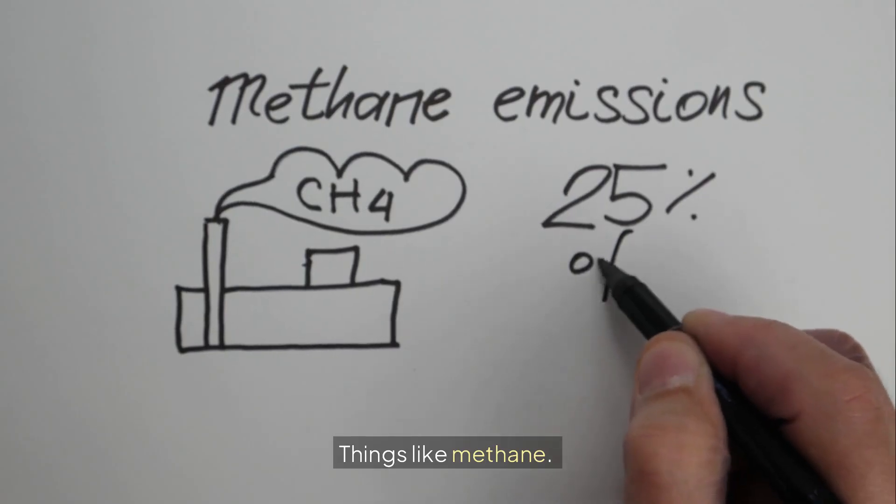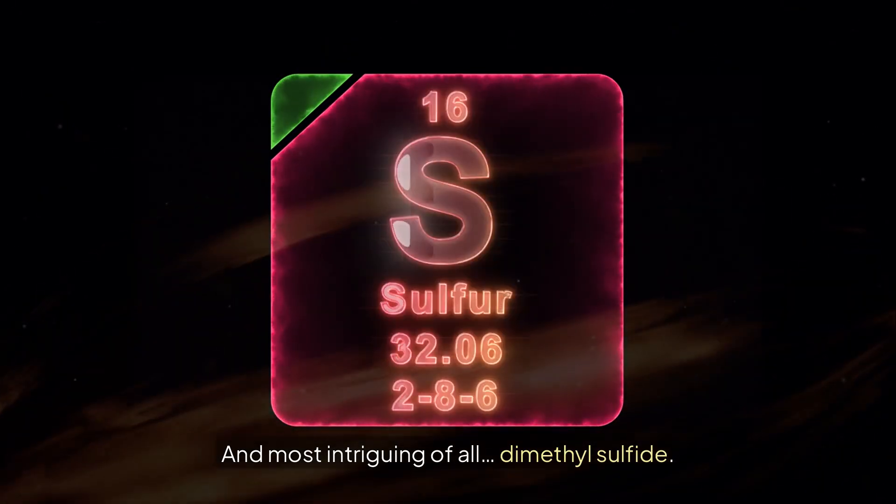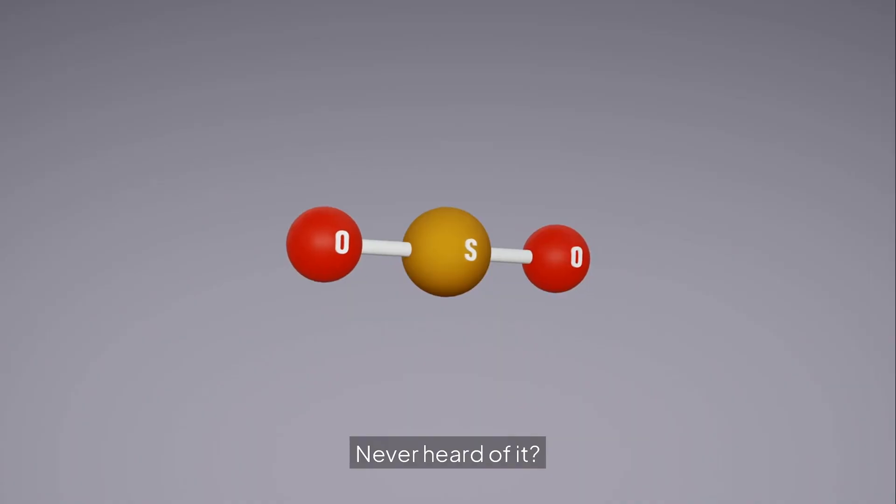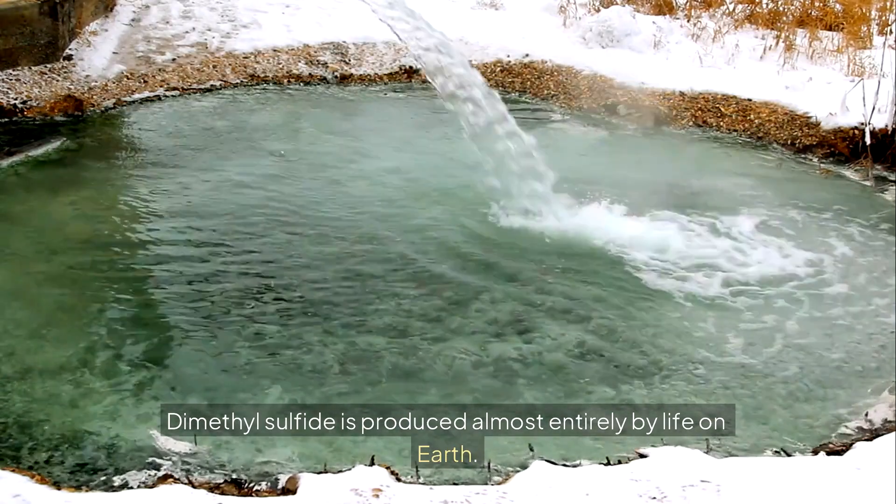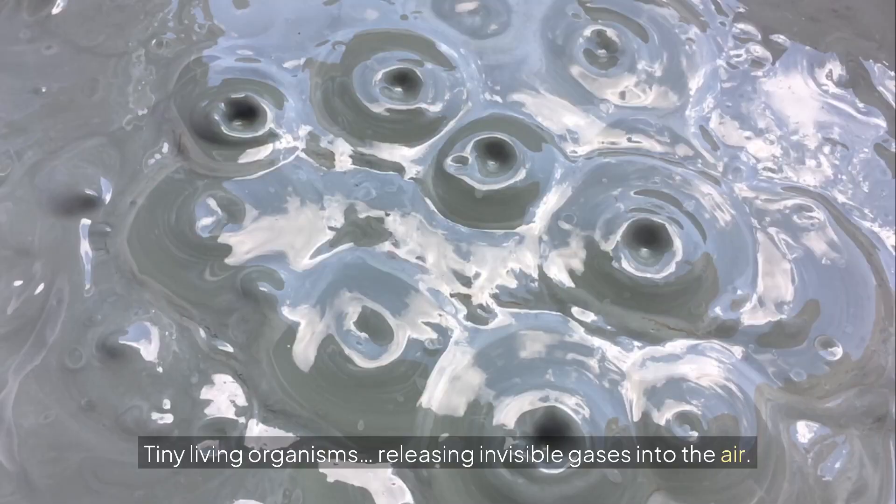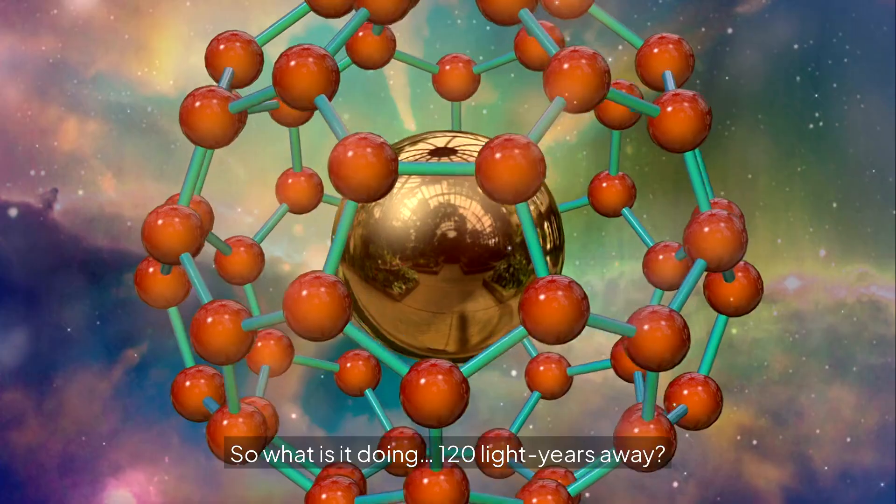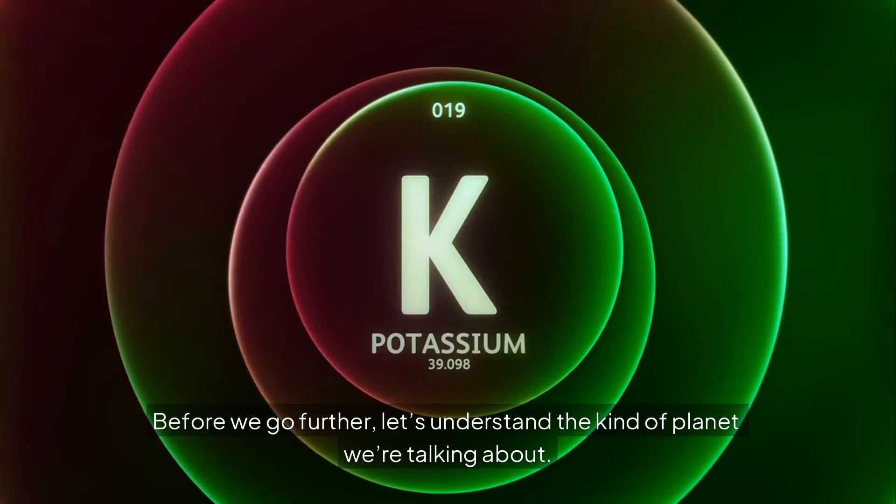Things like methane, carbon dioxide, and most intriguing of all, dimethyl sulfide. Never heard of it? Dimethyl sulfide is produced almost entirely by life on Earth. It comes from plankton in the oceans. Tiny living organisms, releasing invisible gases into the air. So what is it doing 120 light-years away?